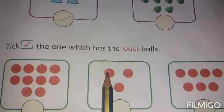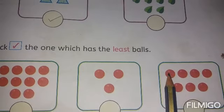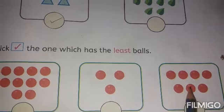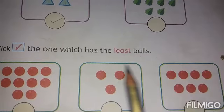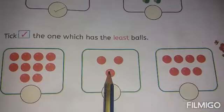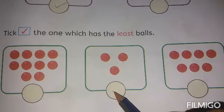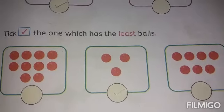See the second picture. 1, 2, 3. 3 balls are here. The next picture: 1, 2, 3, 4, 5, 6, 7 balls. 10 balls, 7 balls, and 3 balls. Which is the least? 3 balls are the least. So put a tick mark.